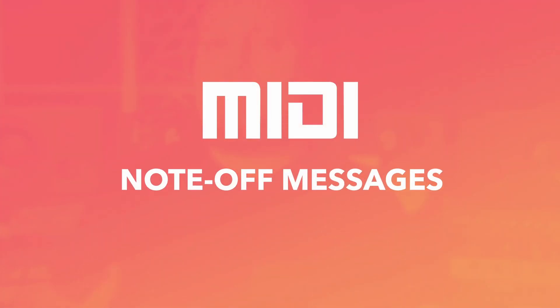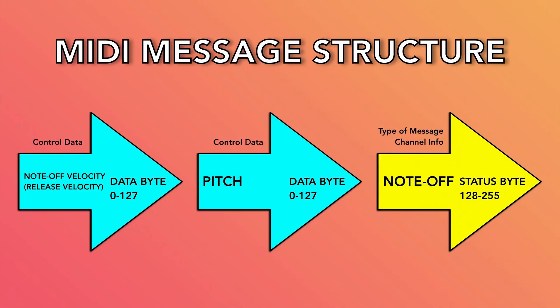This is where those 0 to 127 values come from that you commonly see in music programming. What about the note-off message? When you release a key on your MIDI controller, this still sends a 3-byte message. The status byte defines it as a note-off message, the first data byte defines the pitch, and the second data byte sends a note-off velocity — how quickly or slowly you release the key. In most situations, note-off velocity doesn't really matter, but in some rare situations it can be used to control additional expression and effects.